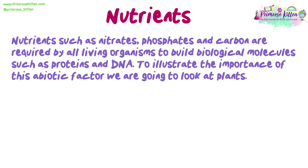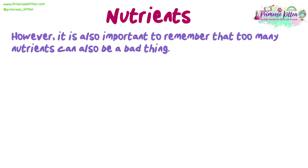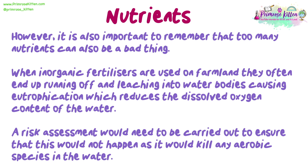Nutrients such as nitrates, phosphates and carbon are required by all living organisms to build biological molecules such as proteins and DNA. If designing a habitat for plant species, it is important to look at soil fertility, as this will be the main provider of nutrients. If the soil has quite a low fertility, it may not be able to support a large population of plants. Nutrients may need to be added artificially through fertilisers or by planting leguminous crops that fix nitrogen. However, it is also important to remember that too many nutrients can be a bad thing. When inorganic fertilisers are used on farmland, they often end up running off and leaching into water bodies causing eutrophication, which reduces the dissolved oxygen content of the water. A risk assessment would need to be carried out to ensure this would not happen, as it would kill any aerobic species in the water.